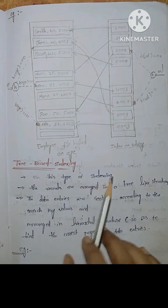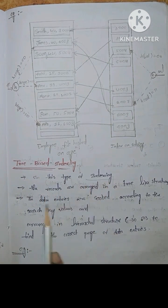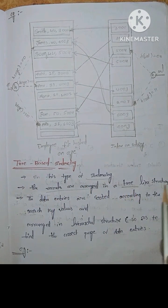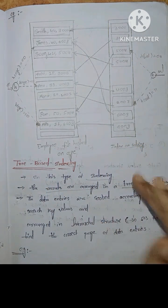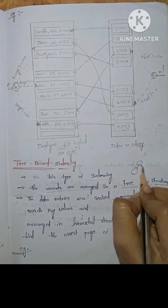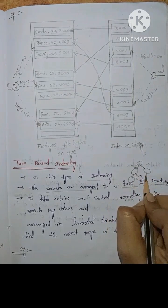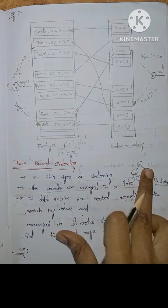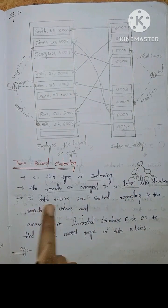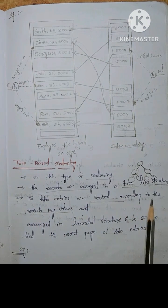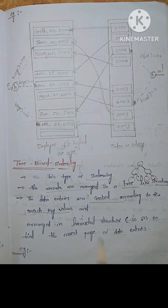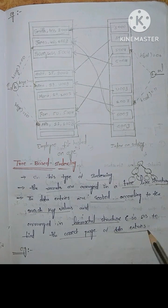Next one: tree-based indexing. In this type of indexing, the records are arranged in a tree-like structure. The data entries are sorted according to the search key values and arranged in a hierarchical structure, so as to find the correct page of data entries.